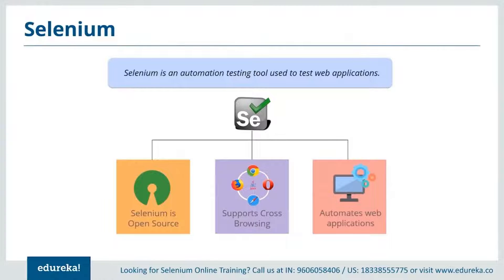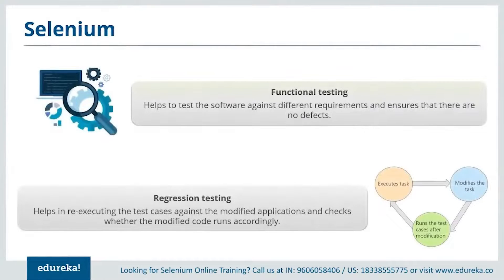Regarding the license — Selenium is free of cost. The user does not have to pay for any version of this tool. The latest version available is Selenium 3.1. For end-to-end guidance on setting up Selenium, refer to the link in the description. Selenium is highly flexible when it comes to functional and regression testing. Functional testing ensures no defects against business requirements, and regression testing helps re-execute tests against a modified application.